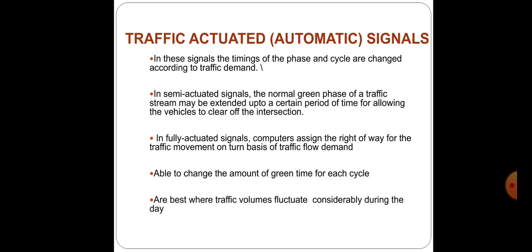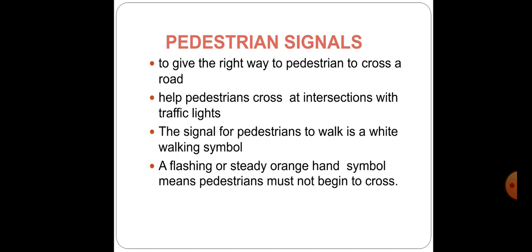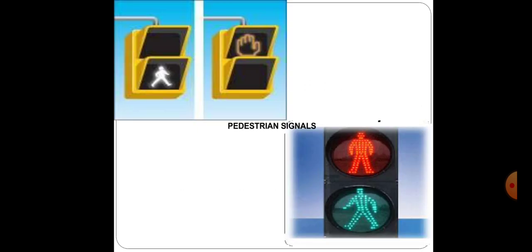Pedestrian signals are used to give the right of way to pedestrians to cross the road. Road users include both drivers and pedestrians. Pedestrian signals are installed at intersections controlled by traffic signals to enable pedestrians to safely cross the road. The signal for pedestrians to walk is usually a white walking symbol. At certain mid-block locations on urban roads with very high pedestrian crossing demand, separate pedestrian signals may be installed.